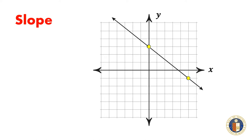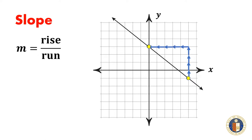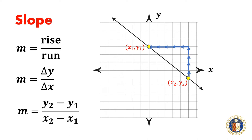The slope is the ratio of the rise over run. It is the ratio of the change in y to the change in x. m equals y-sub-2 minus y-sub-1 all over x-sub-2 minus x-sub-1.